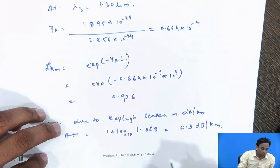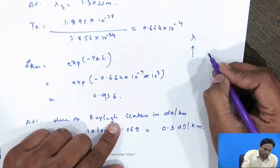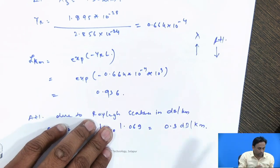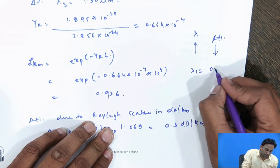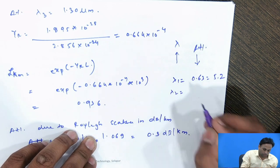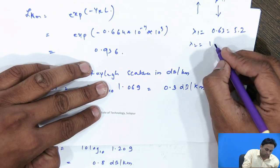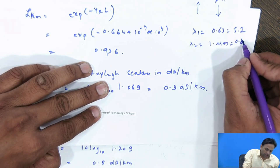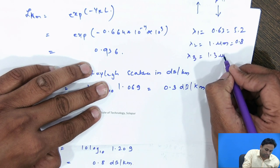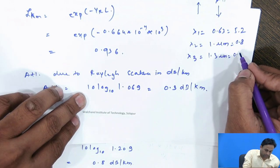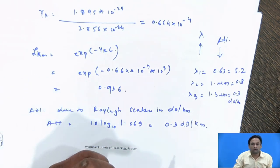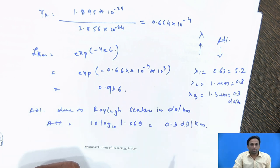From the results, it is clear that if you go on increasing the wavelength, the attenuation due to Rayleigh scattering decreases. At lambda 1 = 0.63 micrometer, attenuation is 5.2 dB/km; at lambda 2 = 1.0 micrometer, it is 0.8 dB/km; and at lambda 3 = 1.3 micrometer, it drops to 0.3 dB per kilometer. This confirms that increasing wavelength reduces Rayleigh scattering attenuation.